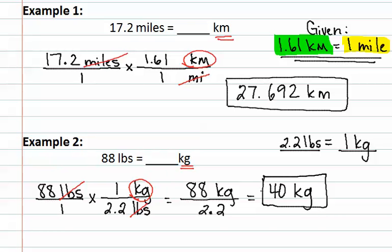Using units in your answer is very important. We now see that for 88 pounds, it equals 40 kilograms.